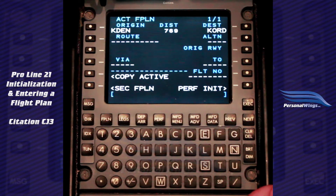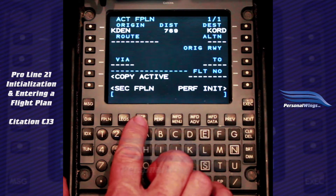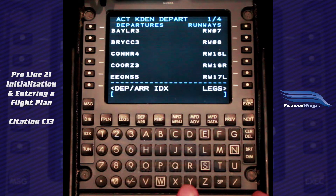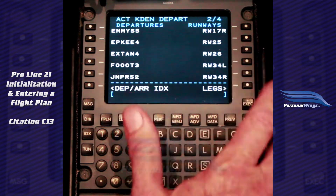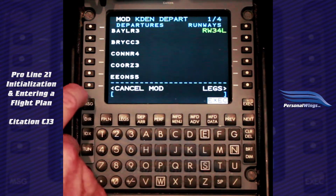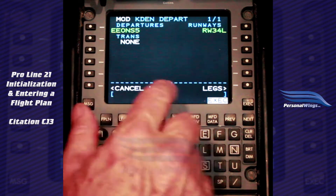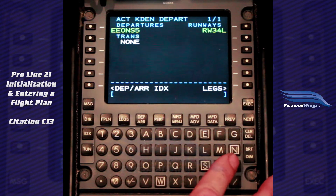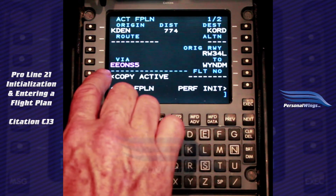This loss of integrity signal appears because we're doing this in the hangar. Now we have to decide what our departure runway is — that's one of the best things to enter first, because it helps you determine your departure route. We press the depart arrival key and select runway 34L. Now we can execute, but while we're still on this page, let's go ahead and pick our departure. We're going to pick the EON 5 departure. The transition is none. We execute.